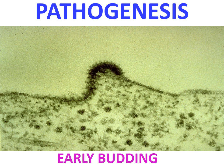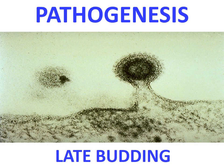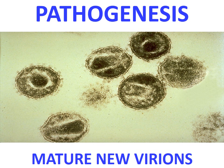This electron micrograph shows the budding formation: the virus buds out from the host cell membrane. This is late budding in which the virion is almost completely outside the cell surface. Next to it is a virion that has entered into circulation and come out from the host cell. These mature new virions are ready to infect other T cells and APCs — T lymphocytes and CD4 T lymphocytes — leading to further virion formation.